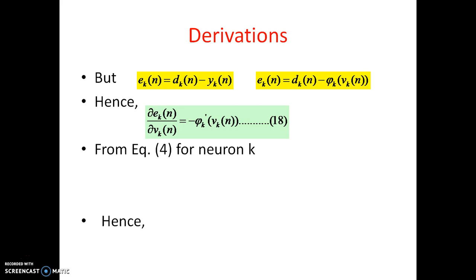As Dk of N is a constant it will be 0. So this will be like this. And from equation 4 for kth neuron we can write like this Vk of N is equal to sigma j is equal to 0 to M Wkj of N Yj of N. And hence we can see the differentiation partial derivative of Vk of N with respect to Yj of N and that will be Wkj of N.